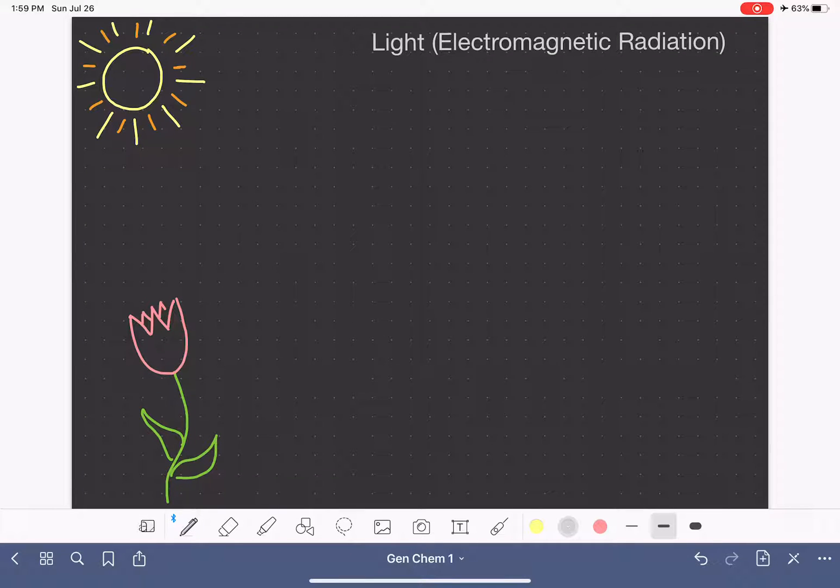In this video, I'm going to talk about the way in which energy is transmitted between two objects. Now, before I get started, I do want to tell you that chemists use the word light and energy interchangeably. And we also use the term electromagnetic radiation to refer to energy.